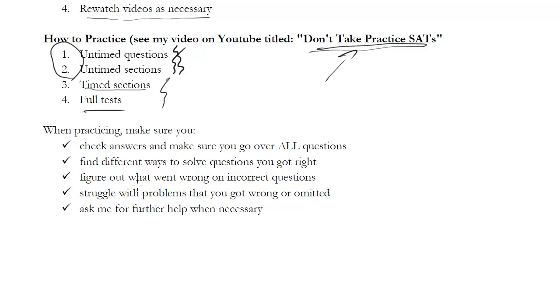Of course, if you got a question wrong, you want to try to figure out what went wrong. Did you make a mistake? Did you drop a negative? Did you just not know what to do? And then you want to struggle with the problems that you got wrong or you omitted. Really try to figure them out on your own. You have access to the answer, but really try to figure them out before this last stop, which is if you can't figure anything else, you can't figure it out, go ahead. Then you can ask me for further help with a question. But that should be your last step. You should do most of the work, if possible yourself, because that's where the learning is going to come in.